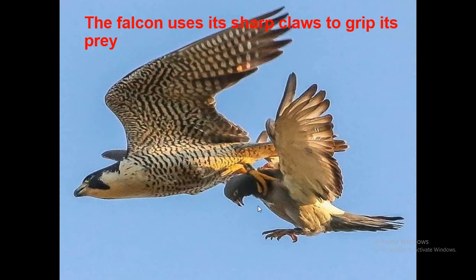The falcon uses its sharp claws to grab its prey. Animals that feed on other animals are called predators. They need adaptations that enable them to catch their prey. Predators usually have strong muscles, jaws, and claws to grab their prey tightly and kill them. As we see here with the falcon, it uses its sharp claws to grab its prey.